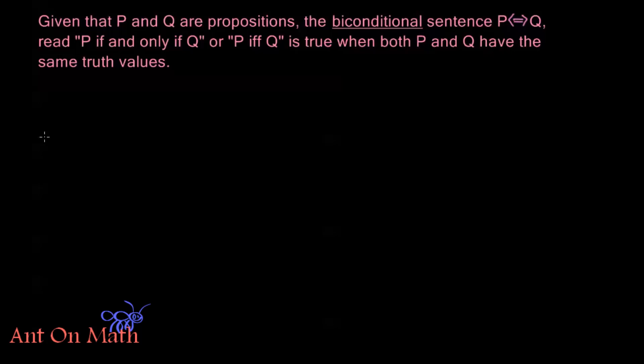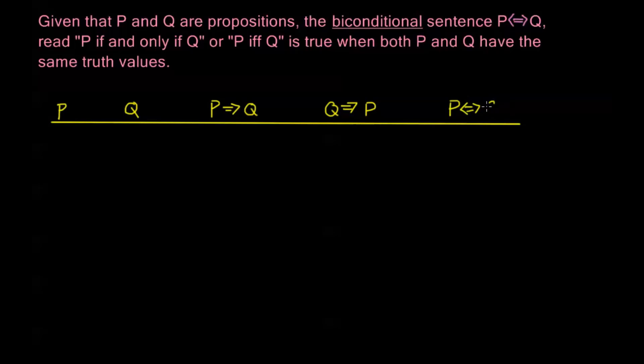Just like with some of these other videos, we're going to make a truth table and figure out more about this biconditional statement. If I have propositions P and Q, I want to look at P implies Q, Q implies P, and this biconditional statement P⟺Q. Setting up my truth values for my simple propositions, we want to look at all the combinations that P and Q can be.